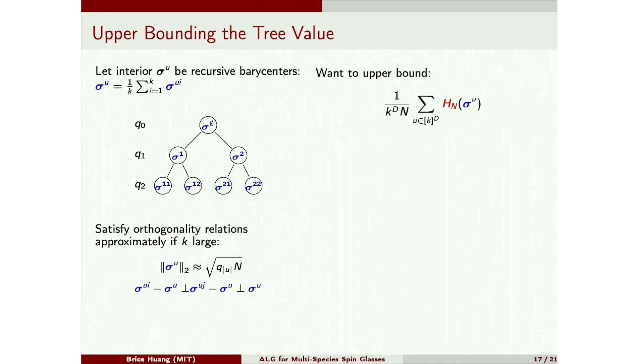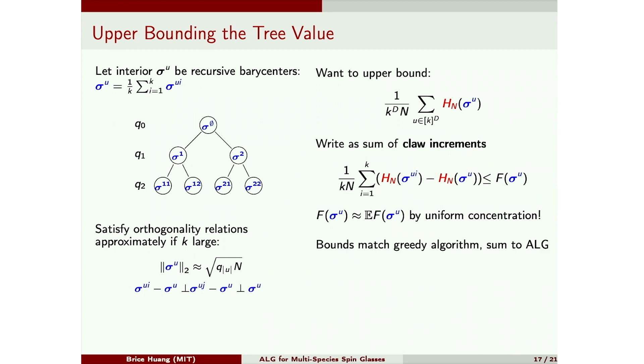So we have this constellation of points that look like an ultrametric tree. And we can define sigma u for u indexed by interior nodes of the tree by just taking recursive barycenters. And it turns out that these points will satisfy approximately this increment orthogonality relation. So this is satisfied by any point and its children. So now we want to upper bound this average evaluation of the Hamiltonian. And we write this as a sum of these parent-to-children claw increments. And each of these is exactly upper bounded by this function f that we defined. And this gives us control of this quantity. Because by uniform concentration, each of these f is upper bounded by its expectation, which is some deterministic number. And by just adding up these upper bounds, we get to upper bound this average energy of the tree.